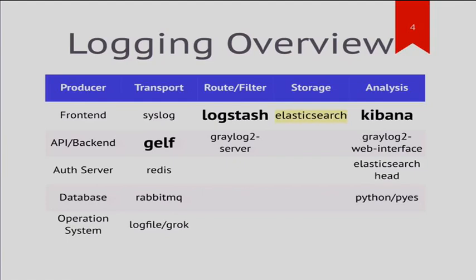Then you have to route and filter your logs — you can do this with Logstash or the Greylog 2 server. You need storage for your log files; Elasticsearch is one of the great open source tools that not only lets you search logs but do all kinds of analysis. For the frontend, I'll talk about Kibana, a JavaScript-only framework. The Greylog 2 server has a bundled web interface. You can also use the plain Elasticsearch Head plugin, or use Python with the PyES library to build custom queries and reports against your log files.